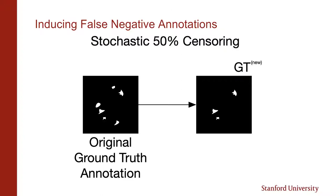When asked if speeding up performance would yield any particular type of annotator error, our expert radiologists said that most likely we would induce false negatives, or missing lesion annotations, if they tried to speed up their annotation performance. To better understand how missing annotations would affect our performance, we stochastically knocked out or censored 50% of the 3D connected components in our annotations. This simulated having a 50% false negative rate in silico.